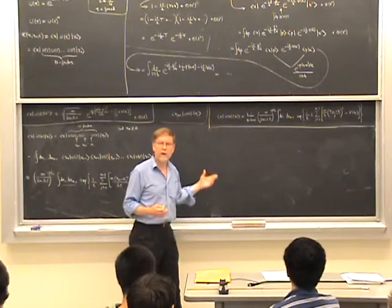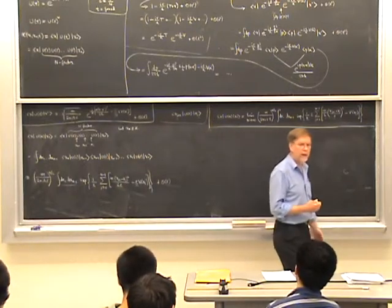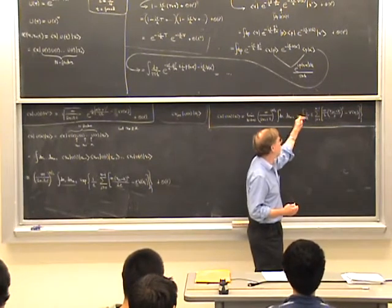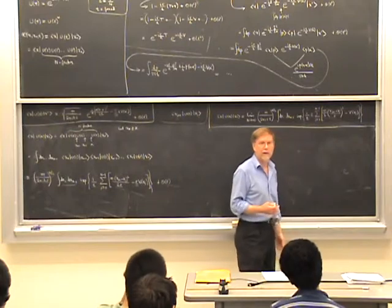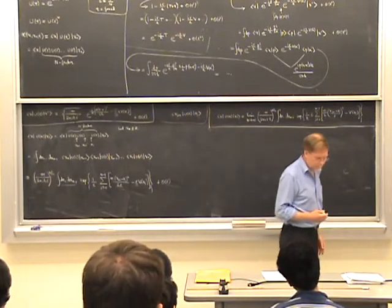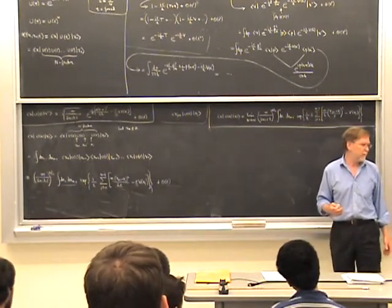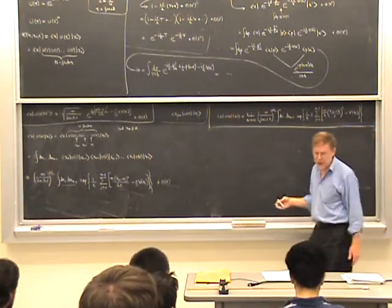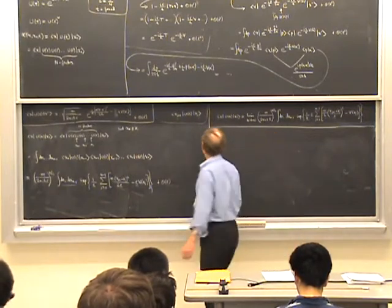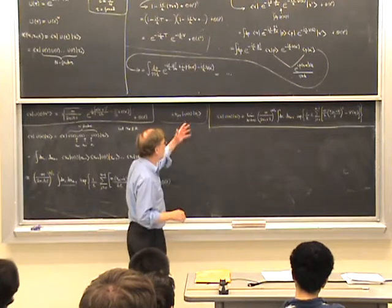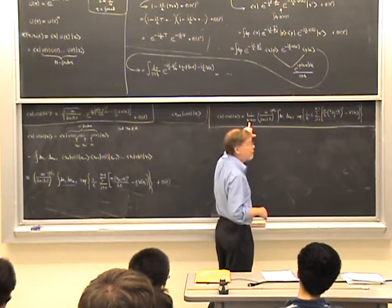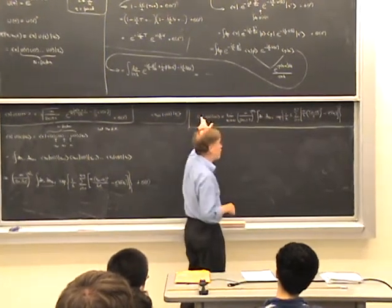There are similar types of infinite-dimensional integrals that occur in statistical mechanics in which the exponent is real — a Gaussian damping with a minus sign — and those are much easier to make rigorous. In fact they have a history that goes back before the path integral, called the Wiener integral. We'll say more about that later when we talk about the partition function of statistical mechanics. For now, let's take this as a formal expression and say that the limit can be calculated in physical problems.